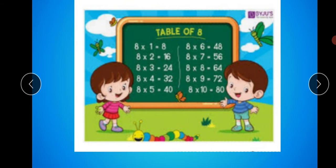Look here, table of 8. 8 ones are 8. 8 twos are 16. 8 threes are 24. 8 fours are 32. 8 fives are 40.